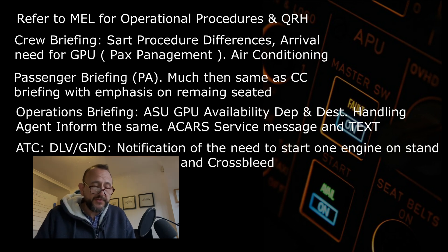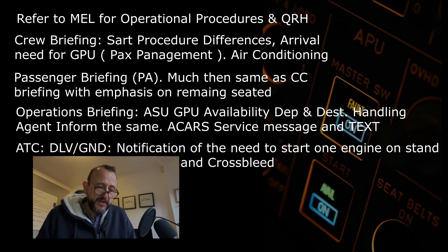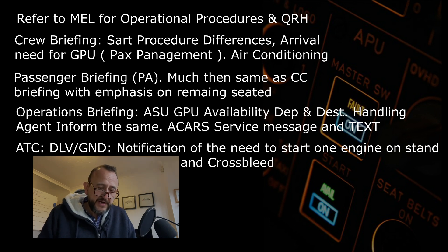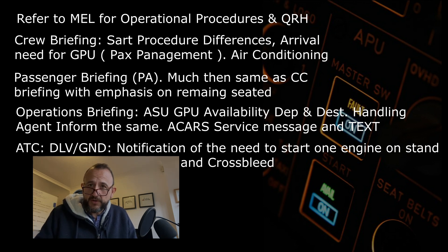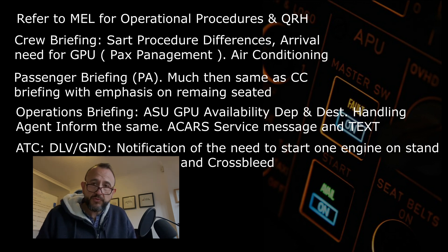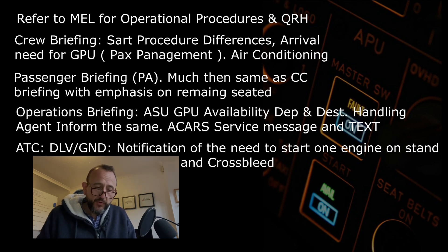Air traffic control was another thing we discussed, because we're starting an engine on stand - that needs to be negotiated with delivery, ground, or apron control. Particularly when starting an engine on the taxi line, the area behind needs to be cleared. There are certain parts of the airport where some things need to be put in place to make the area behind the aircraft safe. Ground crew coordination is needed to make sure the parking brake is set and the pushback tug is clear before running up that other engine. In our case there was a delay to the start while they organized the clearance behind the aircraft to facilitate the cross-bleed start.